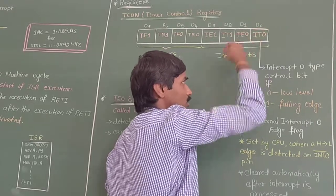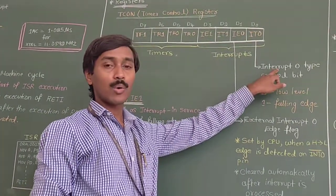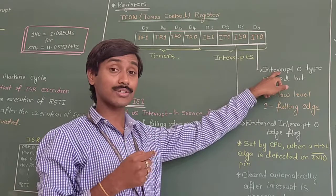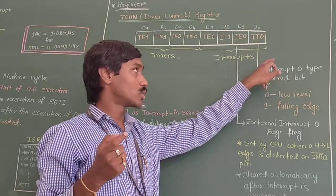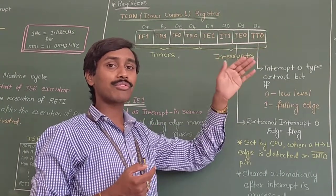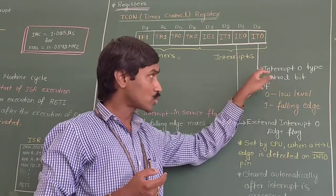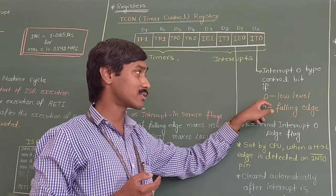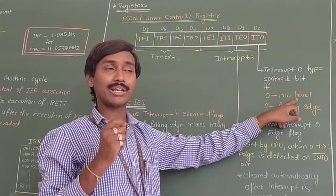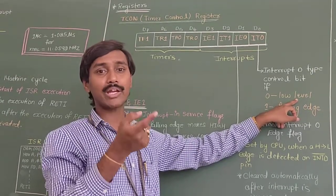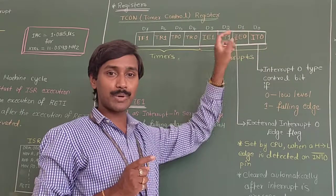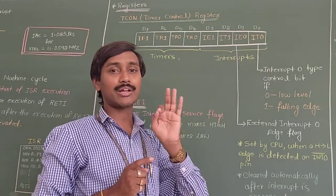IT0 defines the type of external interrupt activation — whether it is level triggered or edge triggered. The IT0 or IT1 bit decides by what mode the interrupt is activated. If the value of IT0 or IT1 is 0, it indicates that the interrupts are low level activated — whenever there is a low level signal on the INT0 or INT1 pin, the corresponding interrupt will be activated. If these bits are set to 1, they become edge triggered interrupts.